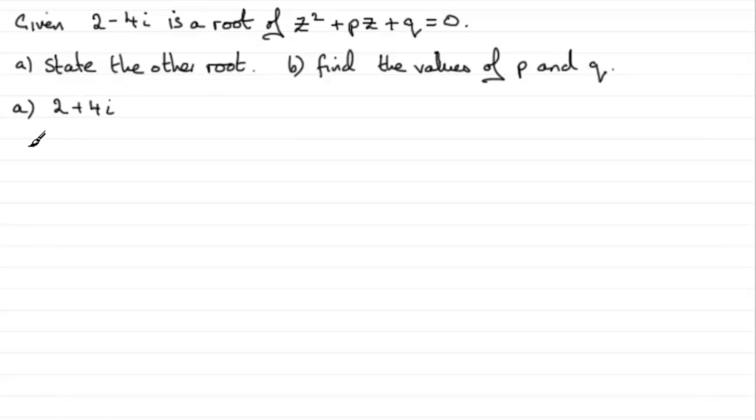Now for part b, what we do, for this version anyway, is that if we know that z equals 2 minus 4i, or it equals 2 plus 4i, the complex conjugate, this means that because we had this kind of equation, the quadratic equation,